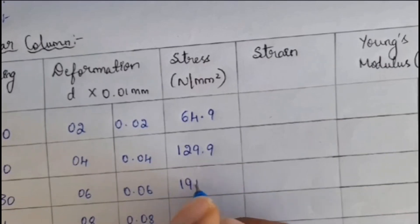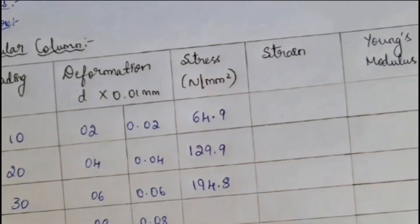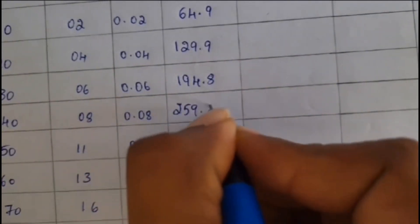30 kilo Newton. That is, 30 into 10 to the power of 3 divided by 0.06. We will be getting as 194.8. Same thing I will be doing for every reading. For fourth one, I will be getting as 259.8. For fifth one, I will be getting as 324.8.